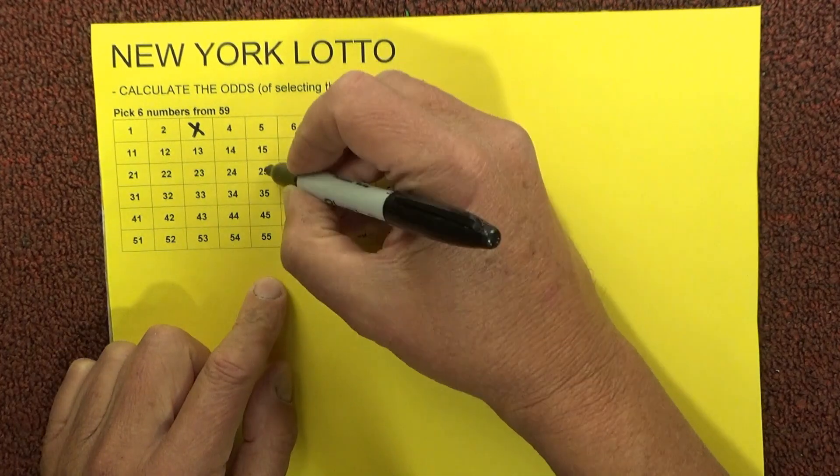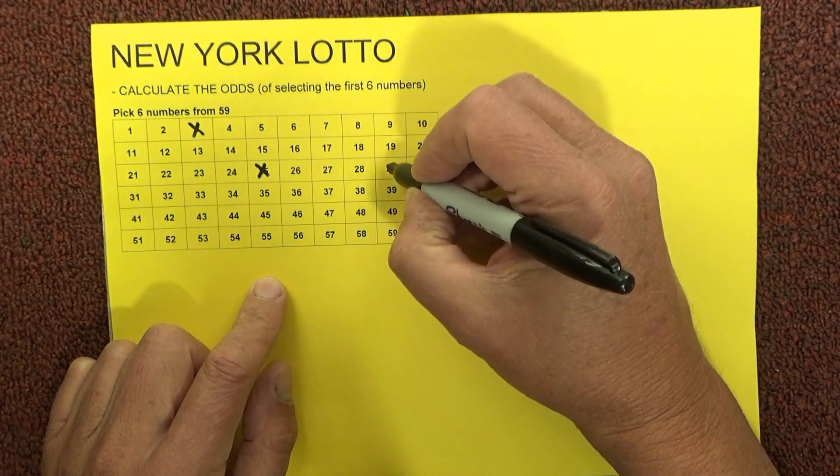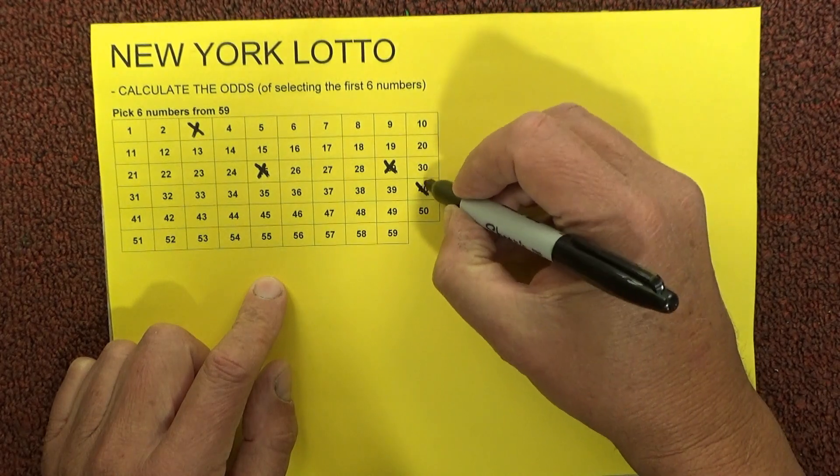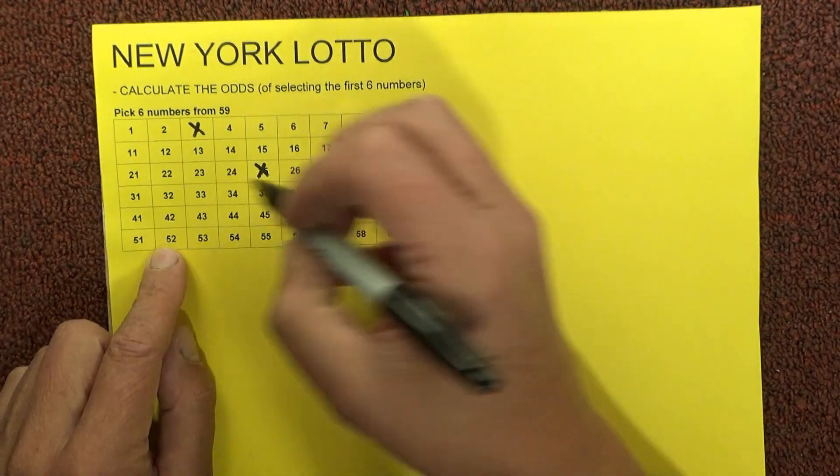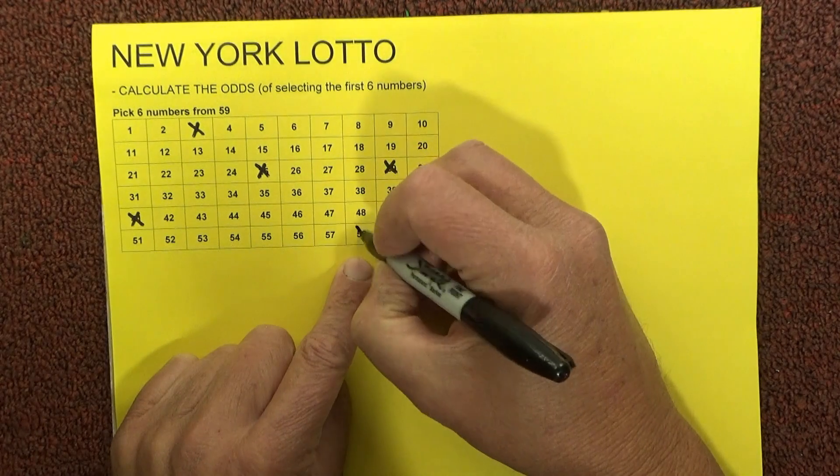I'm taking 3 and 25, 29, 40, 41, and 58. There's my six numbers.